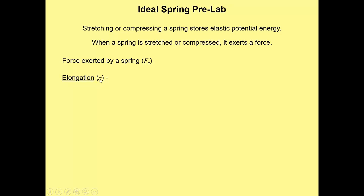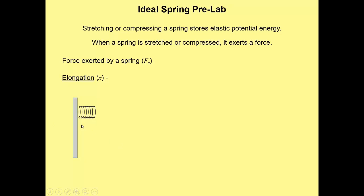E is already something else, so x is used for elongation, and F sub S for the force exerted by a spring. In your Pivot Interactive, it's going to use a spring that looks like a nice horizontal spring. You'll see it just sitting there, and then it gets attached to a dial spring scale — a round dial — attached to the end of the spring.